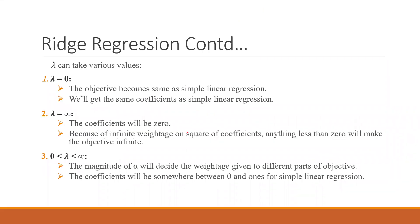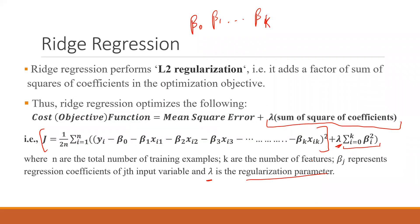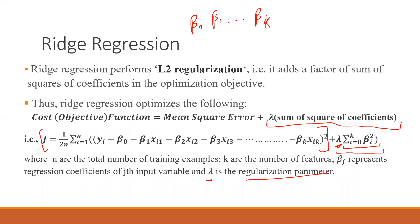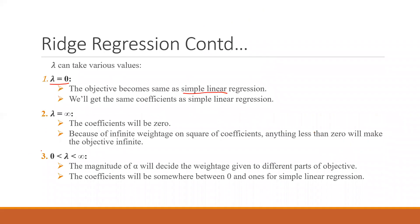Lambda can have multiple values: zero, infinity, or anything between them. When Lambda equals zero, the second term vanishes and the objective becomes exactly the same as simple linear regression — there is no change, and we get the same coefficients as simple linear regression.